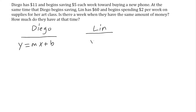We're going to figure out what the slope of our equation is going to be. Remember, the variable m in our equation represents slope, and slope represents a rate of change of our y values as compared to our x values.